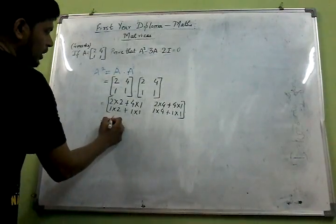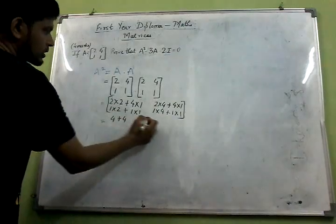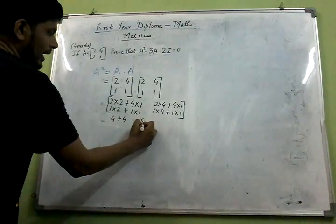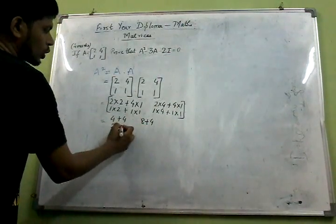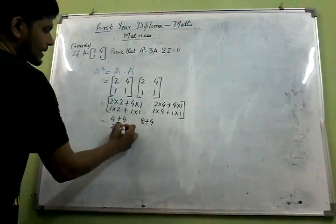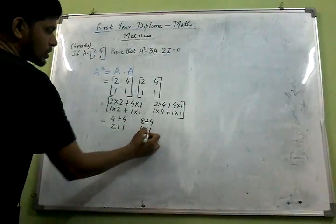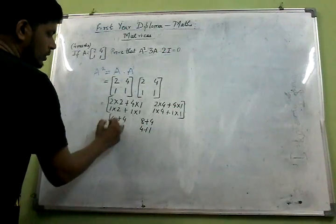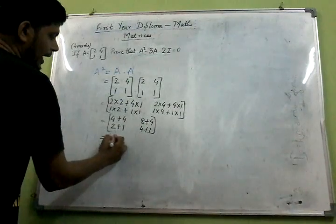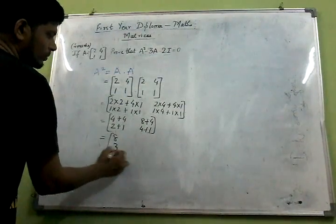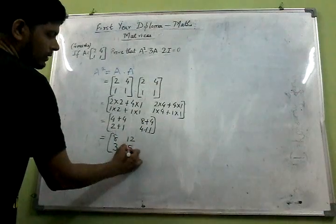So here it will be 4 plus 4, then 8 plus 4, then 2 plus 1, then 4 plus 1. This gives us finally 8, 12, 3, and 5. So here we got A squared.